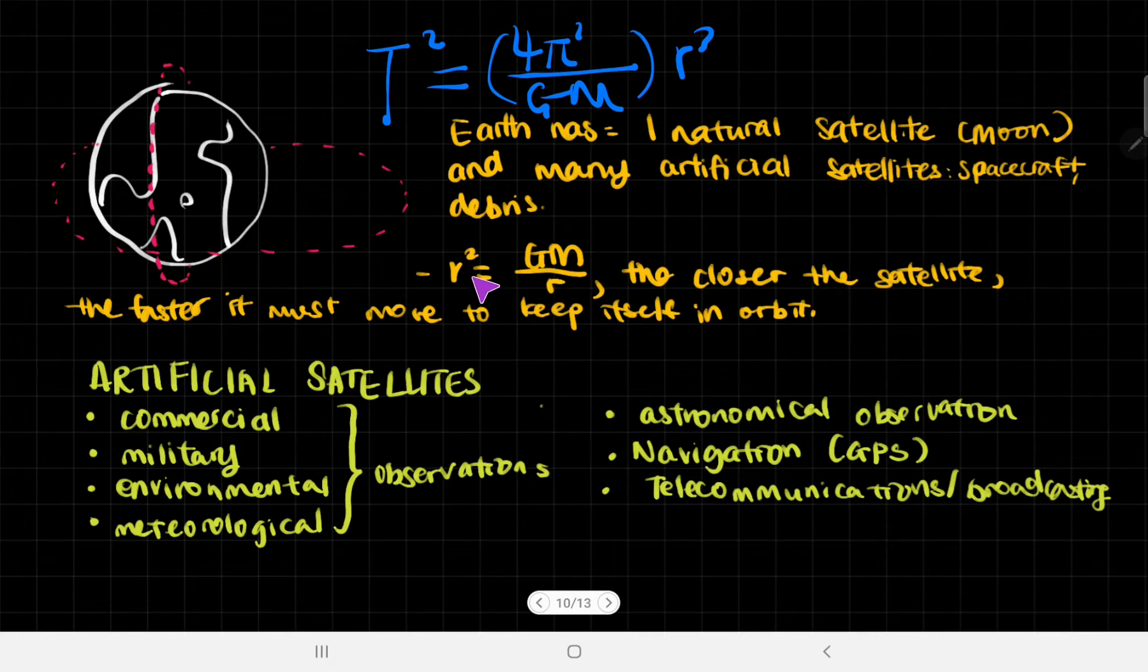Artificial satellites are used for many things. First is observations: astronomical observation, navigation (GPS), and telecommunications/broadcasting. For Earth observation, you can observe for commercial, military, environmental, and meteorological reasons. You can also launch spacecraft to observe space beyond Earth, which gives a big advantage when observing other planets and galaxies.